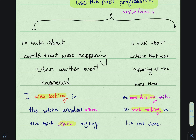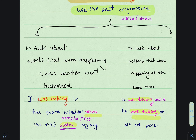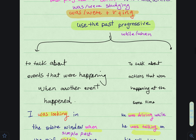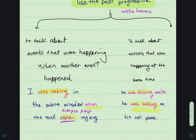One important point: after 'while' we usually use the past progressive, but after 'when' we usually use the simple past. So to summarize: past progressive is formed with 'was/were + verb + -ing'. We can use it with 'while' and 'when' — to talk about an event happening when another event occurred, or two actions happening at the same time. After 'when' comes simple past; after 'while' comes past progressive.